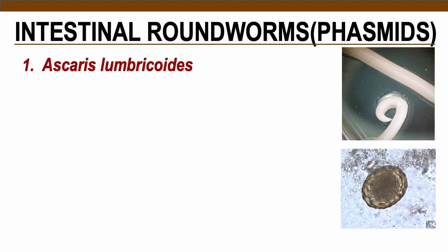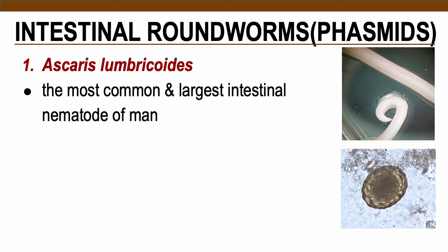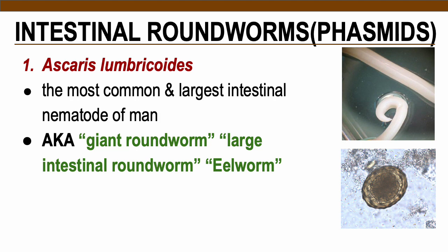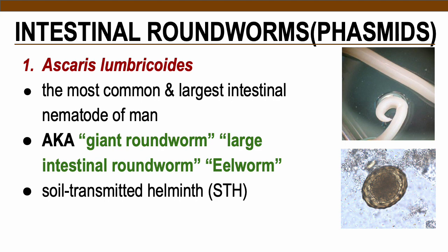The most common intestinal nematode of humans is Ascaris lumbricoides, also known as the giant roundworm, large intestinal roundworm, or eelworm. It occurs more frequently in the tropics such as the Philippines, with an estimated more than 1 billion people infected worldwide, 70% of cases from Asia. It is a soil-transmitted helminth together with hookworm and Trichuris, meaning soil plays a major role in its development and transmission.